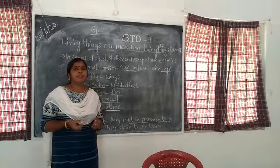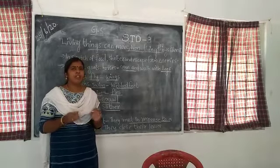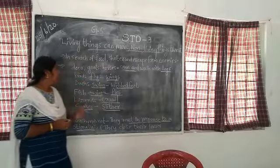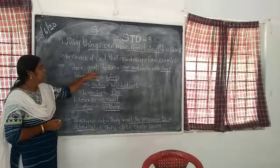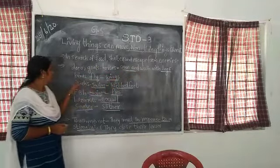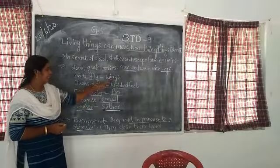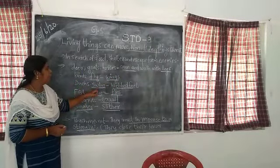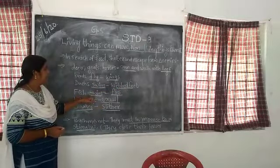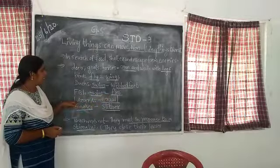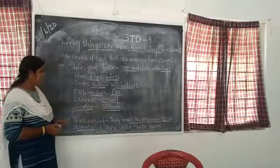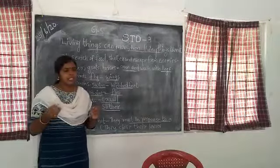Animals move from one place to another in search of food, shelter and to escape from enemies. Deer, fish, goat, and horse can run and move with their legs. Birds fly with their wings. Ducks swim in water with webbed feet. Fish swim with fins. Lizards, crow, and snakes slither.